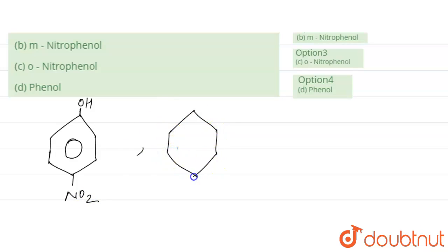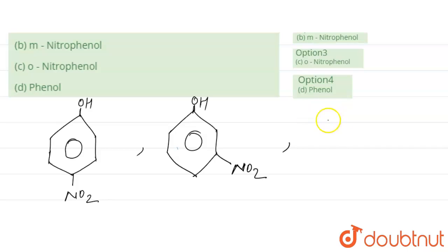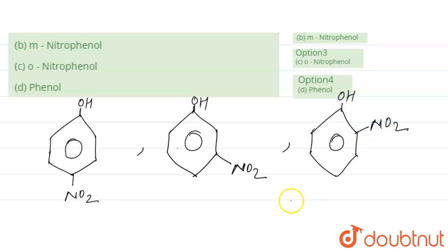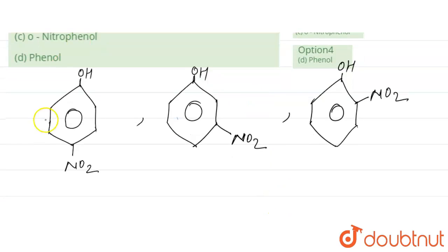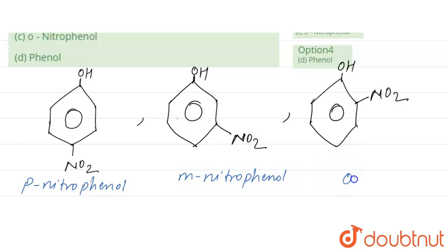The second option is ortho-nitrophenol, where OH is present. For meta-nitrophenol, NO2 is placed at the meta position. For ortho-nitrophenol, OH is present and NO2 occupies the ortho position. So this is meta-nitrophenol and this is ortho-nitrophenol.